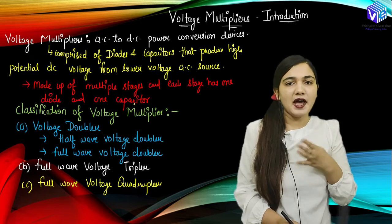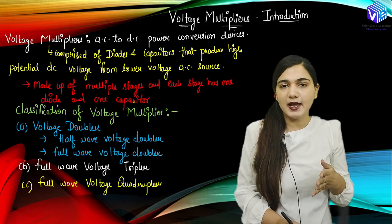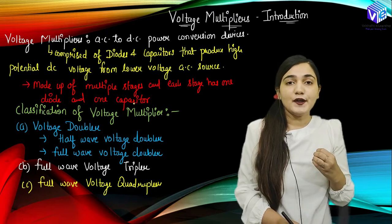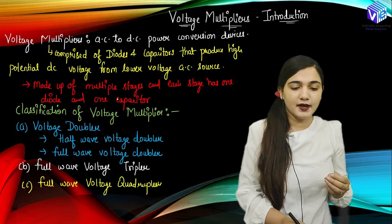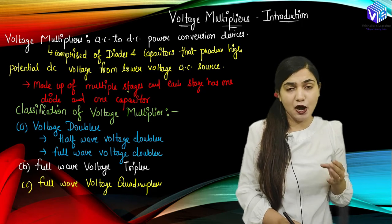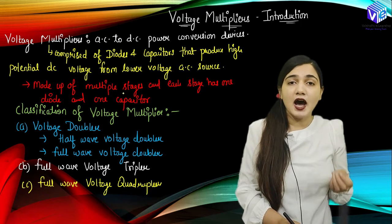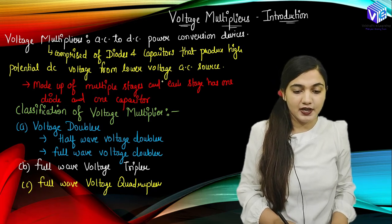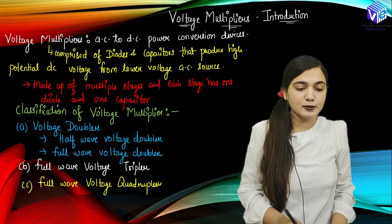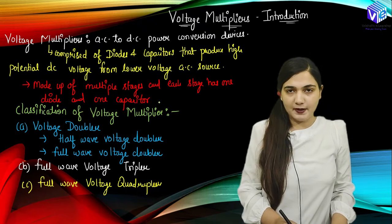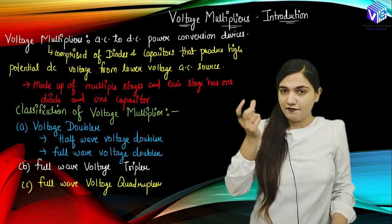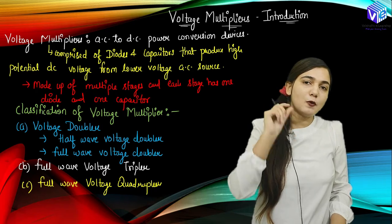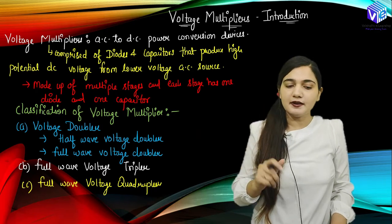If you want to make a 5X multiplier — you want five times the voltage output — you have to make that many multiplier stages. Each stage has one diode and one capacitor, and we are going to classify each stage accordingly.